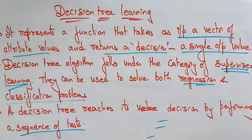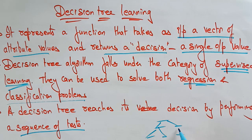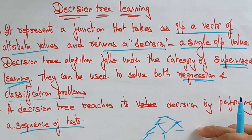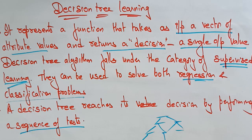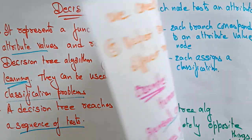A decision tree reaches its decision by performing a sequence of steps. To form a tree, we need to perform some sequence of tests.